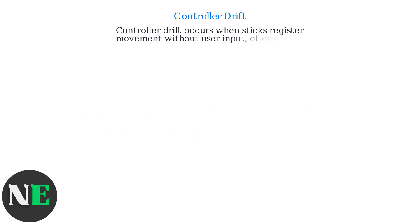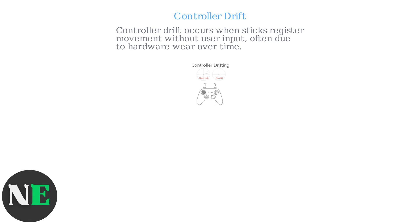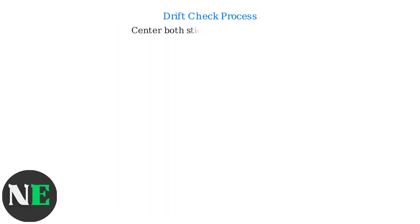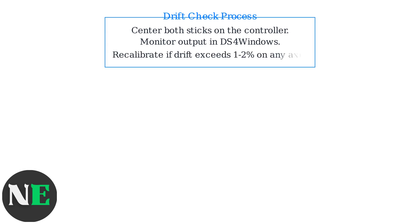Controller drift occurs when sticks register movement without user input, often due to hardware wear over time. To check for drift, center both sticks on the controller and monitor the output in DS4 Windows. If drift exceeds 1% to 2% on any axis, recalibrate using the auto-calibration tools.